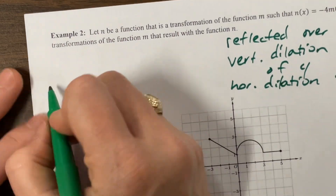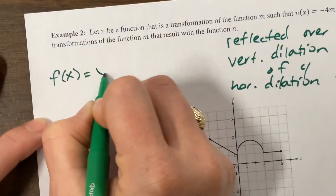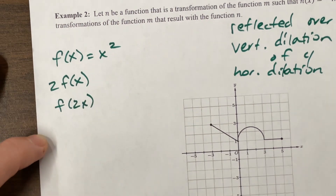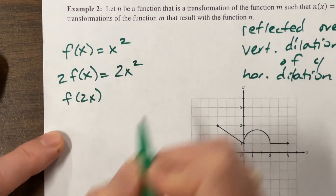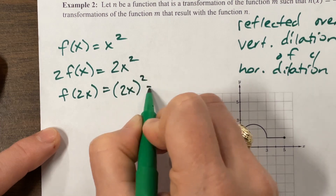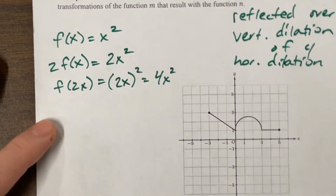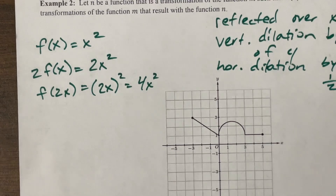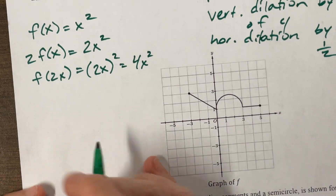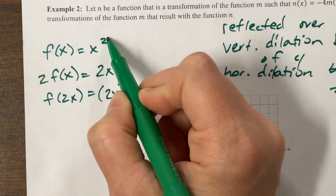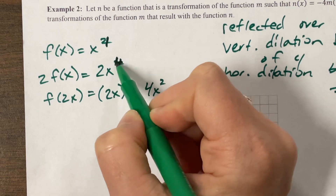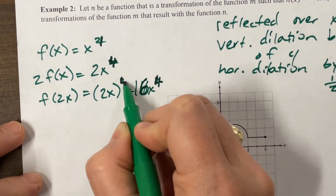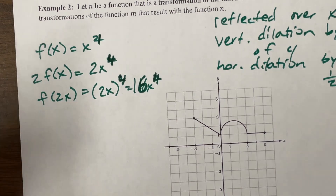If my parent function f of x is equal to x squared, there's a big difference between 2 times f of x and f of 2x. 2 times f of x ultimately becomes 2x squared. But f of 2x becomes 2x squared, which gives you 4 times f right there. So we can find a way to relate vertical dilations and horizontal dilations, but don't overcomplicate your life — it totally depends on what the parent function is. Had this been to the fourth power, 2 to the fourth is 16, giving 16x to the fourth. Point being, the parent function matters.